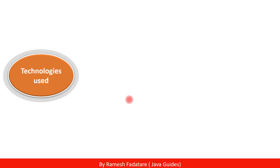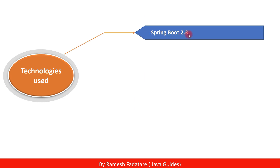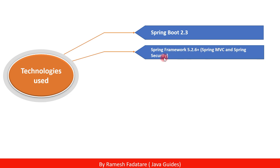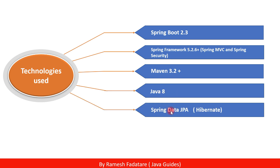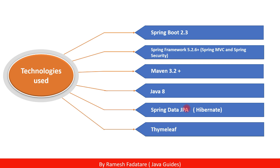Here are the tools and technologies we are going to use. We'll use the latest release of Spring Boot 2.3, along with the Spring MVC and Spring Security modules. Spring Boot 2.3 internally uses Spring Framework 5.2.x. We'll use Maven 3.2 for dependency management and building, Java 8, Spring Data JPA for the repository layer — which internally uses Hibernate as the JPA provider — and Thymeleaf for the view layer.